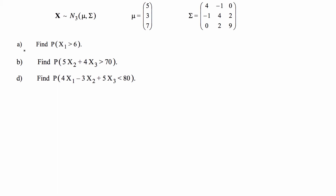In this video I'm going to go over probability problems based on a multivariate normal distribution. We have a random vector x which is a vector of three random variables that are normally distributed. We know it's three because of the three here, and we are given the two parameters: the matrix of means for x1, x2, x3, and the covariance matrix of x.